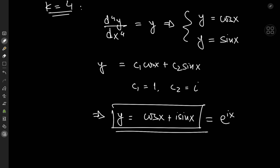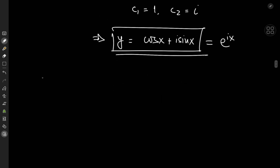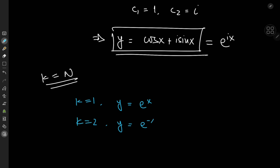How can we use our existing knowledge of the cases k equals 1, 2, and 4 to construct a solution valid for any positive integer n? Sticking with the exponential function choice: for k equal to 1 we had y equal to e to the x; for k equal to 2, y equal to e to the negative x; and for k equal to 4, y equal to e to the ix.